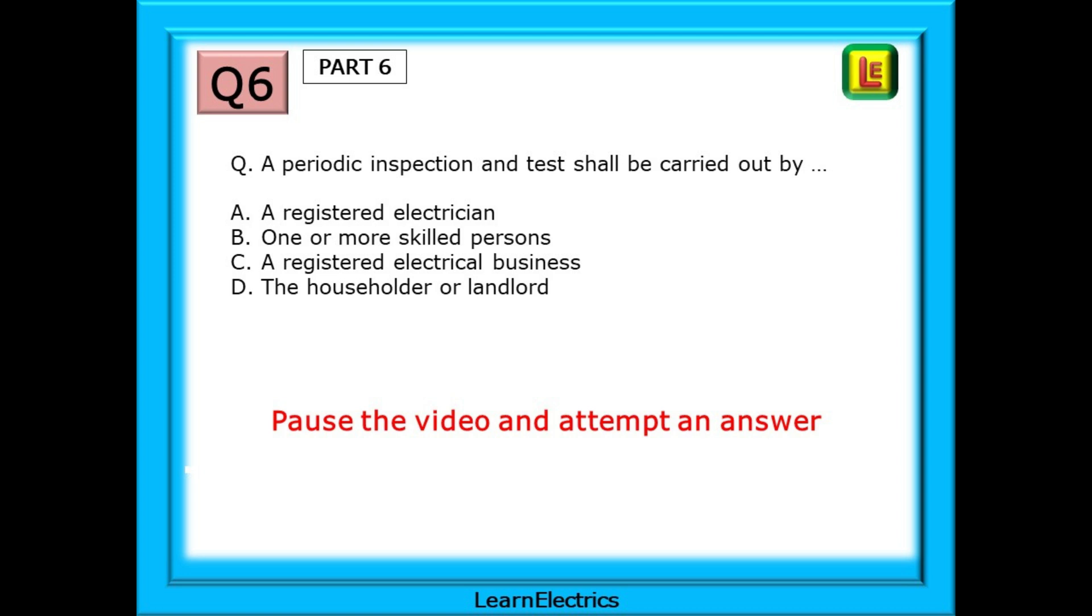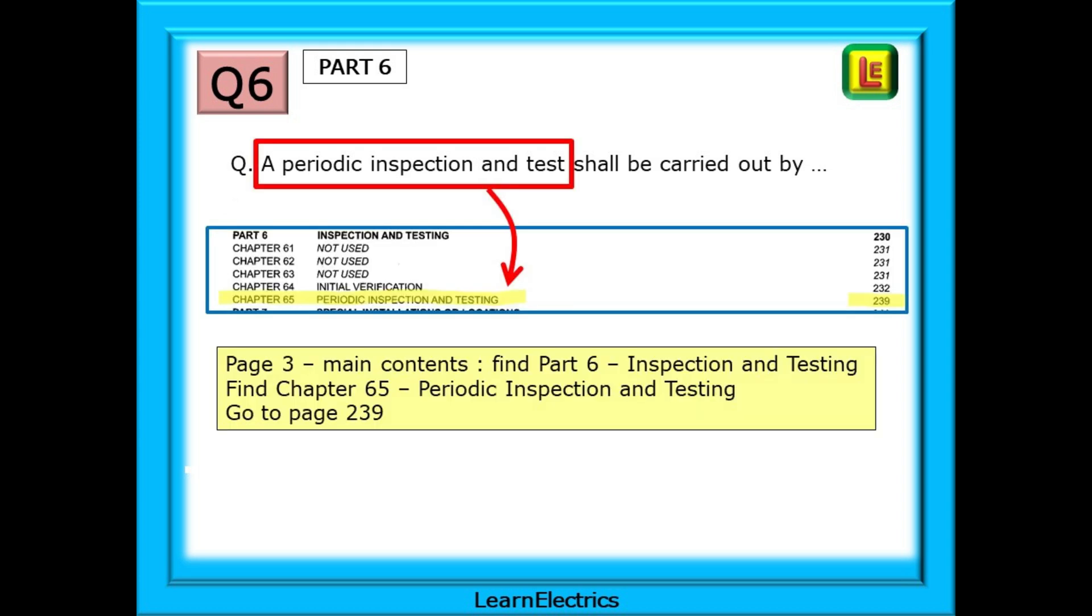Have a go at the answer. The key word here is periodic inspection and test. Find the entry for this about half way down page 3 and follow this to chapter 65 on page 239.